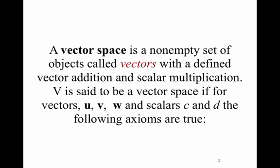A vector space is any non-empty set of objects, called vectors, with a defined vector addition and scalar multiplication. This is just like we saw when we were looking at geometric vectors in Rⁿ, and we had those 10 properties, with a defined addition and scalar multiplication for those vectors. So this is a bit more general. Now, your vector space — you can define addition and scalar multiplication any way you want. And V is said to be a vector space if, for the vectors U, V, and W, and scalars C and D, the following axioms are true.